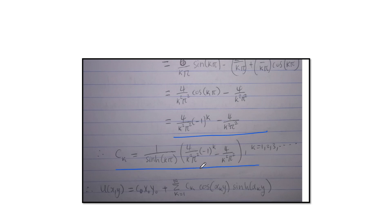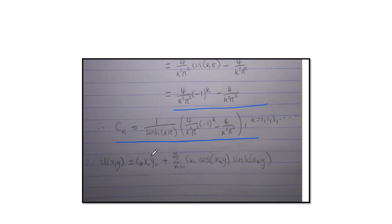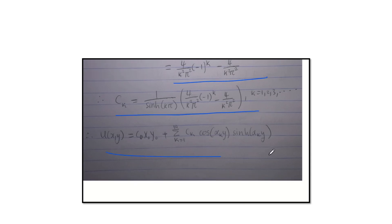So your CK is this. So where there was alpha K, we put the actual value of alpha K, which is K pi over L. So you're going to get something like this, where our L is two. Now you have every piece. So you just put everything together. Now you have your C0, you have your X0, your Y0, and you have your CK there at the top. So your final answer will be this.